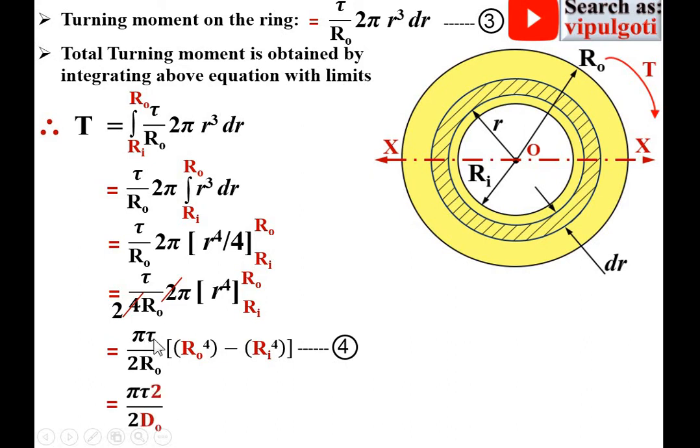To find the torque T, the total torque transmitted by the hollow circular shaft in terms of diameter: πτ/2, but instead of RO, now it is DO/2.